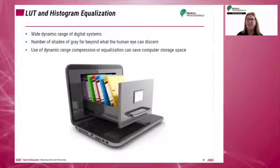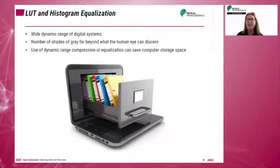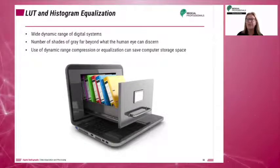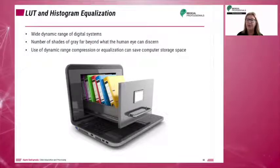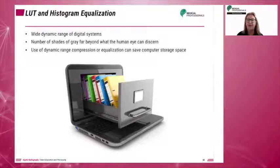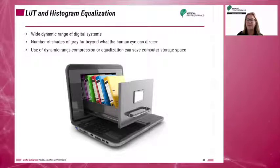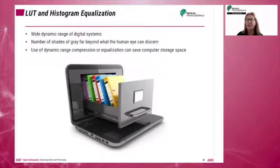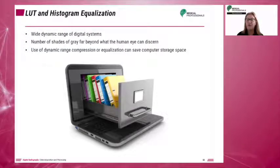Digital imaging systems are capable of representing a great number of gray shades based on the pixel bit depth, referred to as dynamic range. The range of gray shades that can be displayed by each pixel is far beyond what the human eye can differentiate. By compressing the dynamic range, computer storage space can be saved. The dynamic range can be compressed so that the lightest and darkest shades of gray are no longer visible on the displayed images.